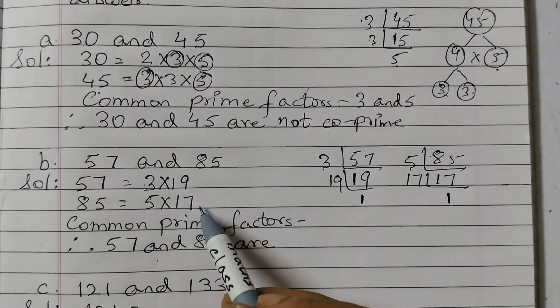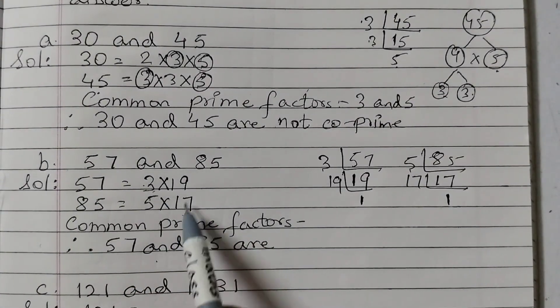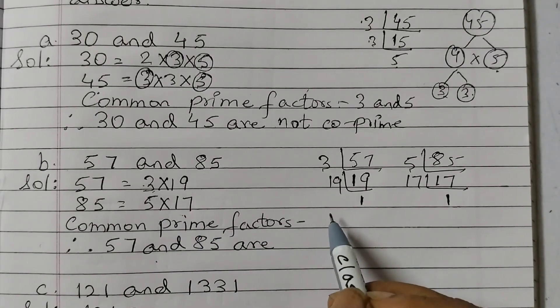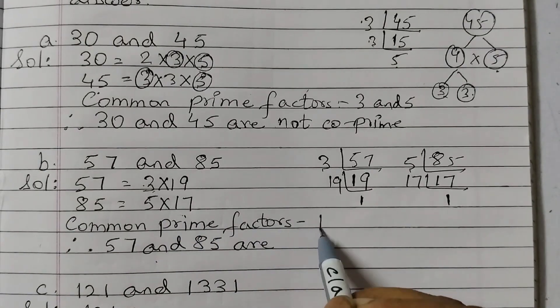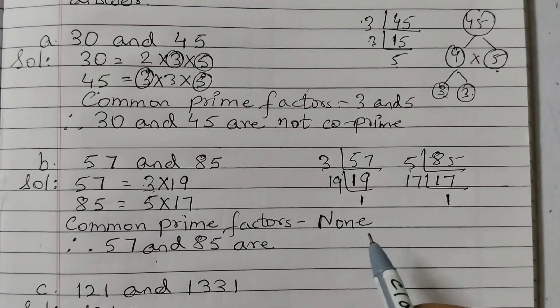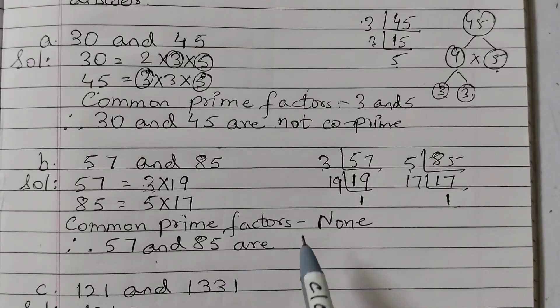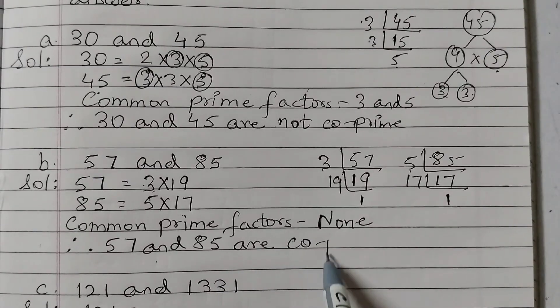Now check if there is any common factor. 3, we don't have. 19, we don't have. That means we don't have any common prime factor here. So we will write none. That means no common prime factor. Therefore, 57 and 85 are co-prime.